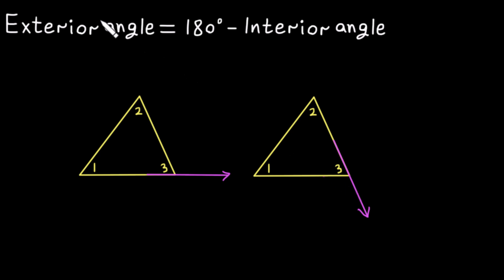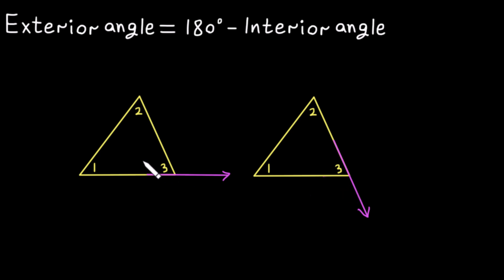Here is exterior angle Y, and here is the other exterior angle. As we know, the exterior angle equals 180 degrees minus the interior angle. This 180 degrees represents a straight angle. So this is the straight angle minus the interior angle. Let's call this angle four and this one angle five. So here we have two exterior angles at this vertex.